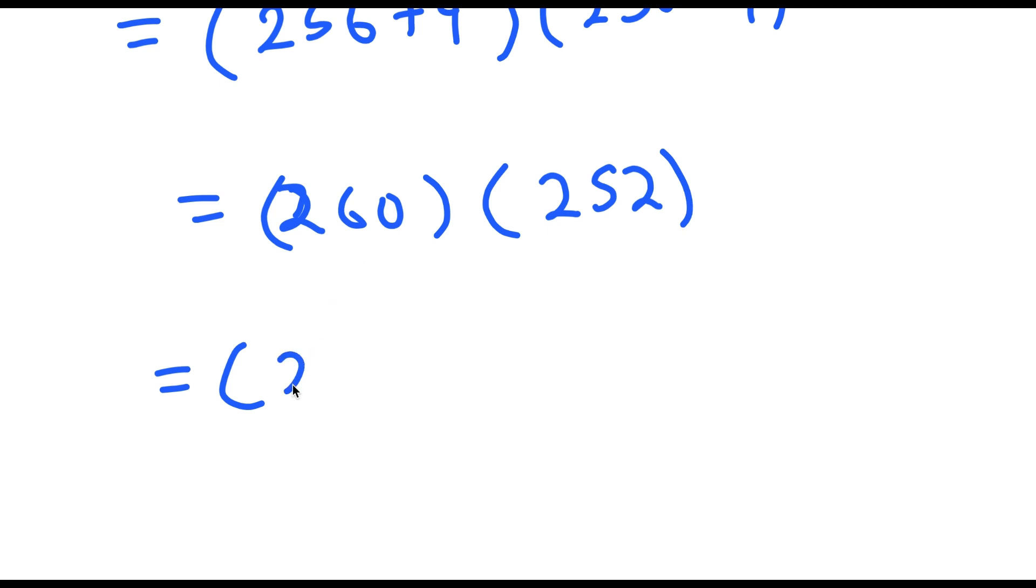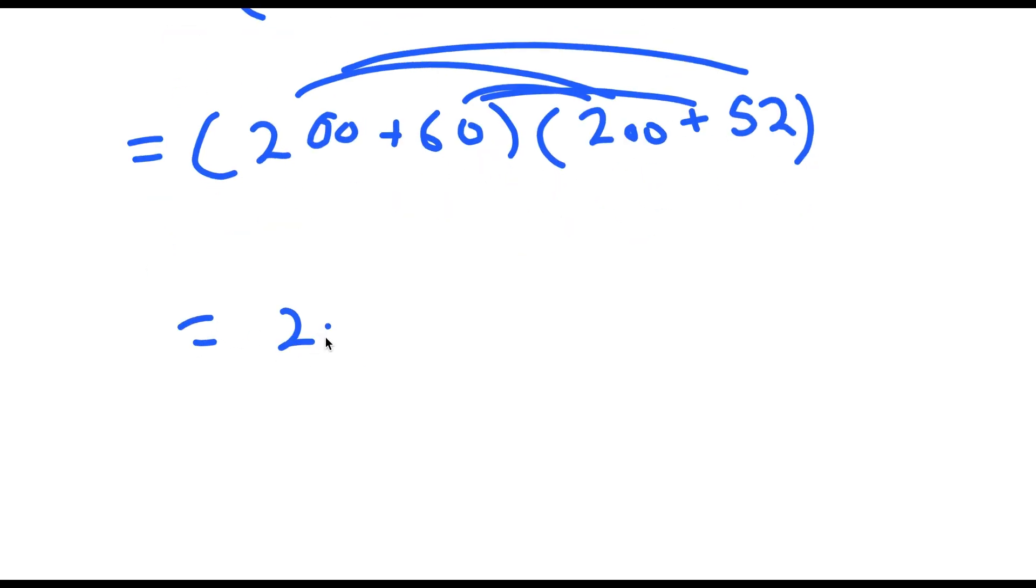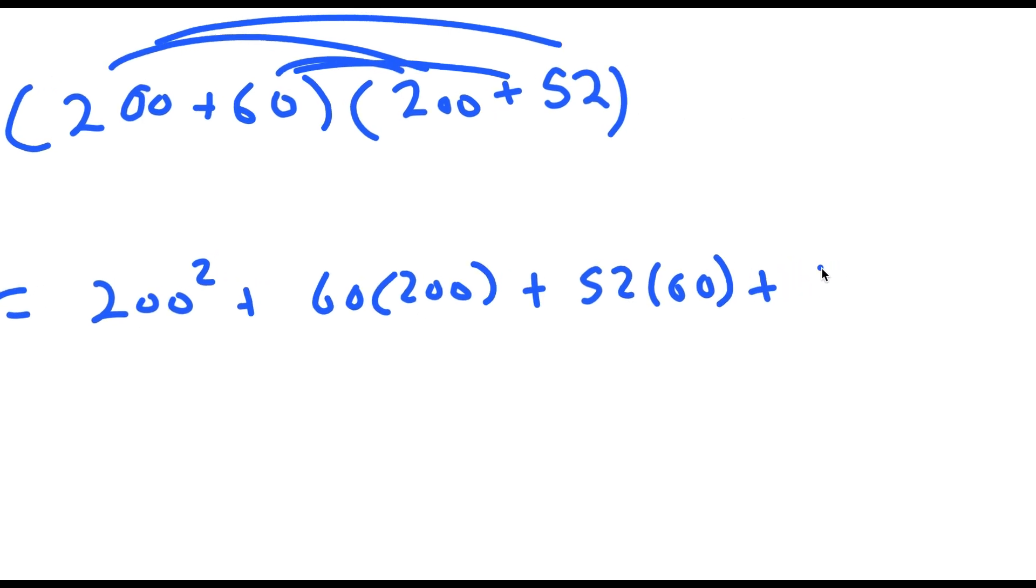Now 260 I can rewrite as 200 plus 60, and 252 I can rewrite as 200 plus 52. So now if I distribute here, I get 200 squared plus 60 times 200 plus 52 times 60 plus 200 times 52.